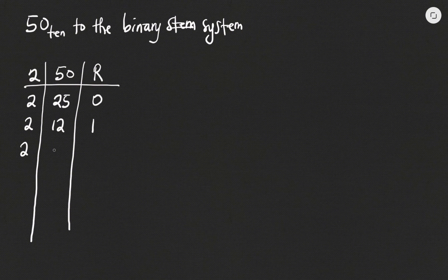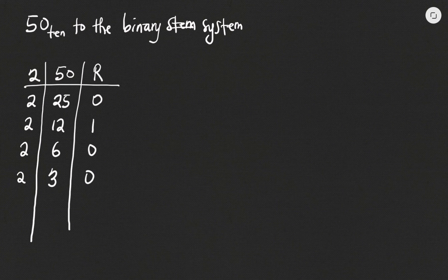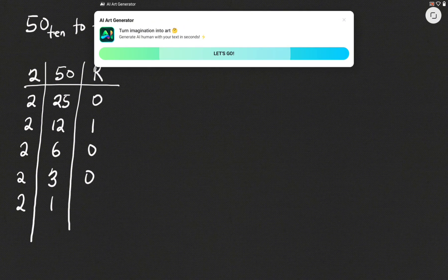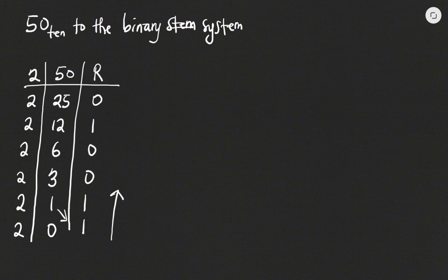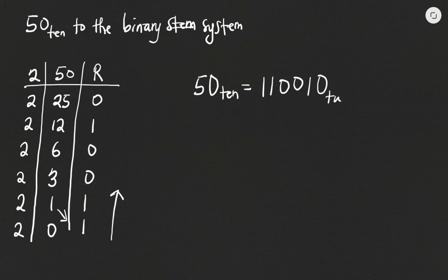How many times would 2 go into 12? 6 times, exactly 12, remainder 0. How many times would 2 go into 6? 3 times, exactly 6, remainder 0. How many times would 2 go into 3? Once, which is 2, remainder 1. Then 2 goes into 1 zero times, and we bring the 1 over. Reading from bottom to top, 50 base 10 is equal to 110010 base 2.